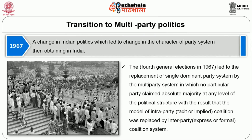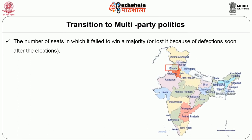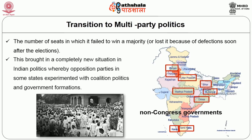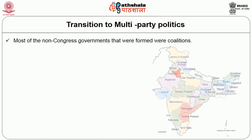The fourth general elections in 1967 led to a replacement of the single dominant party system by a multi-party system. Congress lost power in as many as nine states: Punjab, Haryana, Uttar Pradesh, Madhya Pradesh, Bihar, West Bengal, Odisha, Tamil Nadu, and Kerala. In Tamil Nadu, Congress has never been able to come back to power since 1967, and in West Bengal also since 1977 they remained out of power. Most of these non-Congress governments were coalitional governments.